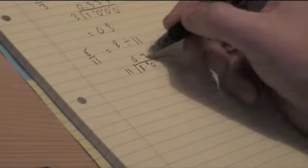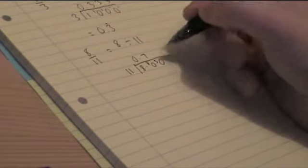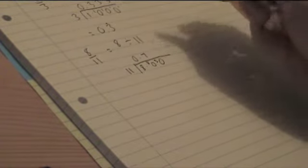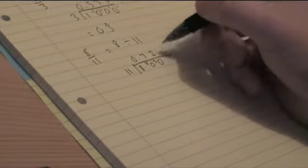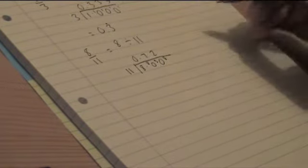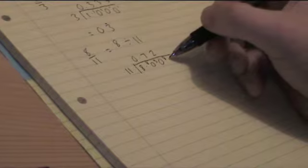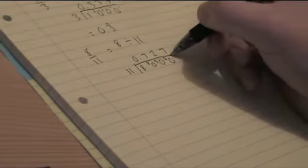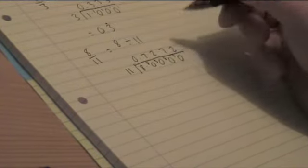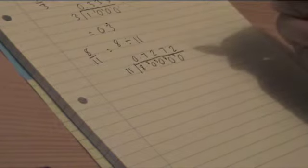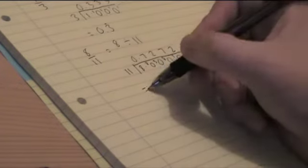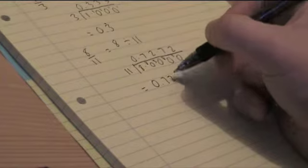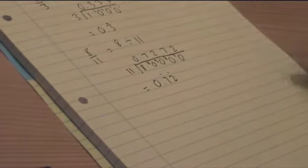So how many 11's go into 80? That's 7, and I have remainder 3. How many 11's go into 30? That's 2, remainder 8. How many 11's go into 80? We know that's 7, remainder 3. And so on and so on. So this time, I have 7 and the 2 recurring. So I write 0.72 with a dot over the 7 and a dot over the 2.